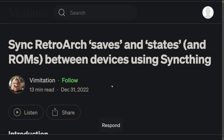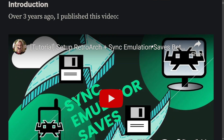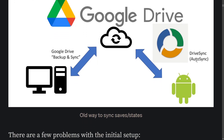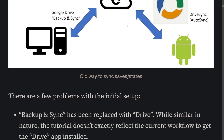About two years ago, I actually wrote a Medium article that details how you set it up using SyncThing. Before, we were setting it up with Google Drive as kind of the central repository, using Google Drive Backup and Sync — a first-party utility that Google had created — and then DriveSync, a third-party utility, to sync your saves and save states up to Google Drive.